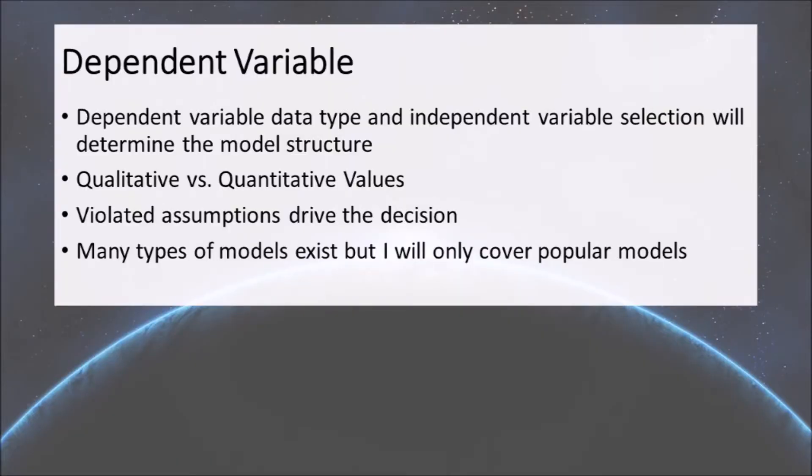The first thing to look at is the dependent variable — what are you modeling? Is it qualitative or quantitative? Quantitative is just numbers; qualitative would be something like gender — male and female — with no numerical value, so you'd have to transcode these. Whether it's quantitative or qualitative helps decide the model type. People get excited and jump to something like weighted least squares, forgetting that the reason we'd use it is because some assumptions of OLS were violated. You pick the simplest model first, and if you fail some assumptions, you move on to a model that corrects for those violations.